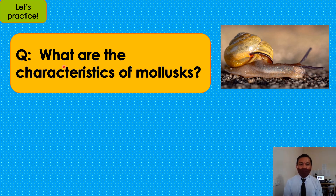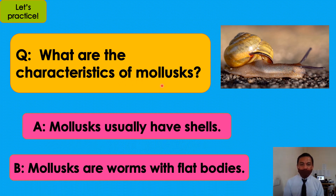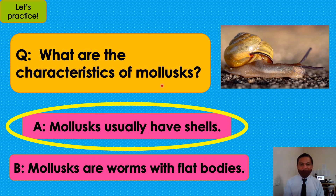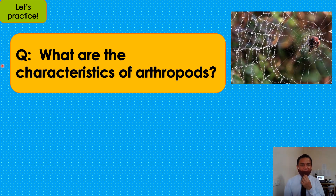What are the characteristics of mollusks? What's your answer: A or B? I will give you three counts: one, two, three. Very good! The answer is — mollusks usually have shells.